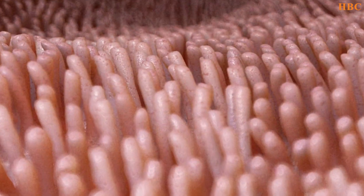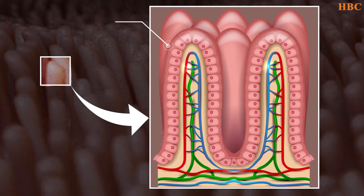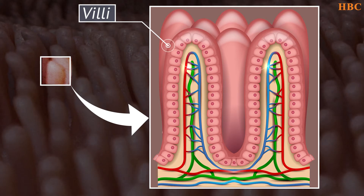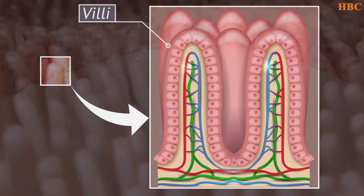The intestinal surface has finger-like structures called villi and dome-like structures called Peyer's patches. They host the largest population of immune cells. The immune response is dependent on activities of lymphocytes which are populated at mesenteric lymph nodes and Peyer's patches.